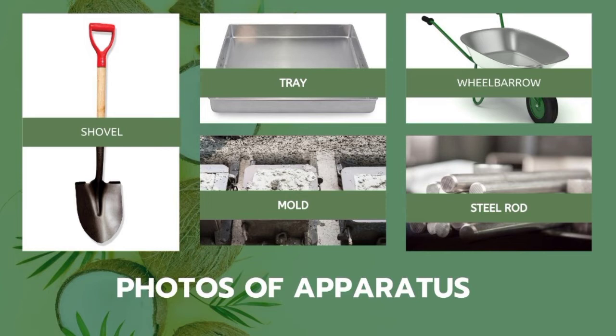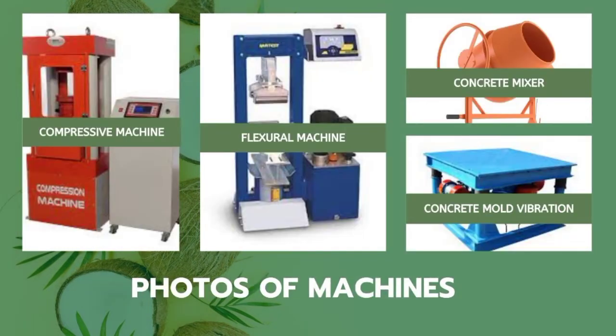These are the photos of apparatus that we used throughout this project for the mixture process, preparing the materials and so on. The apparatus includes a shovel, tray, wheelbarrow, 2 cube molds and 1 prism mold, steel rod, and other molds. These are also photos of machines that we used to conduct compressive strength and flexural tests, to mix the cement and other materials, and a concrete mold vibrator used to compact the mixture into the mold — 4 machines in total, used with the guidance of our lecturer and lab assistant.